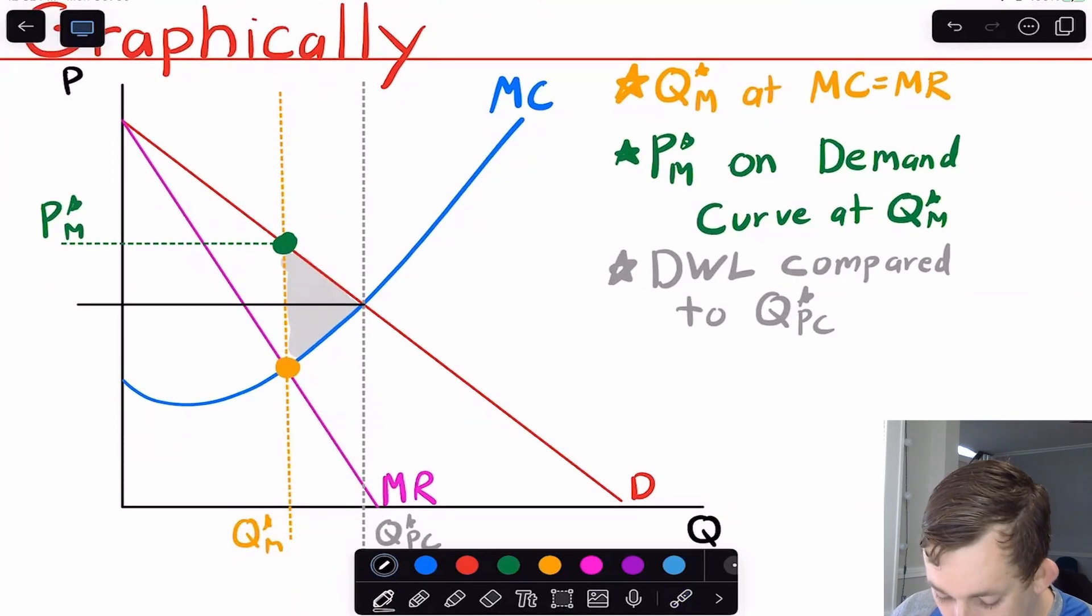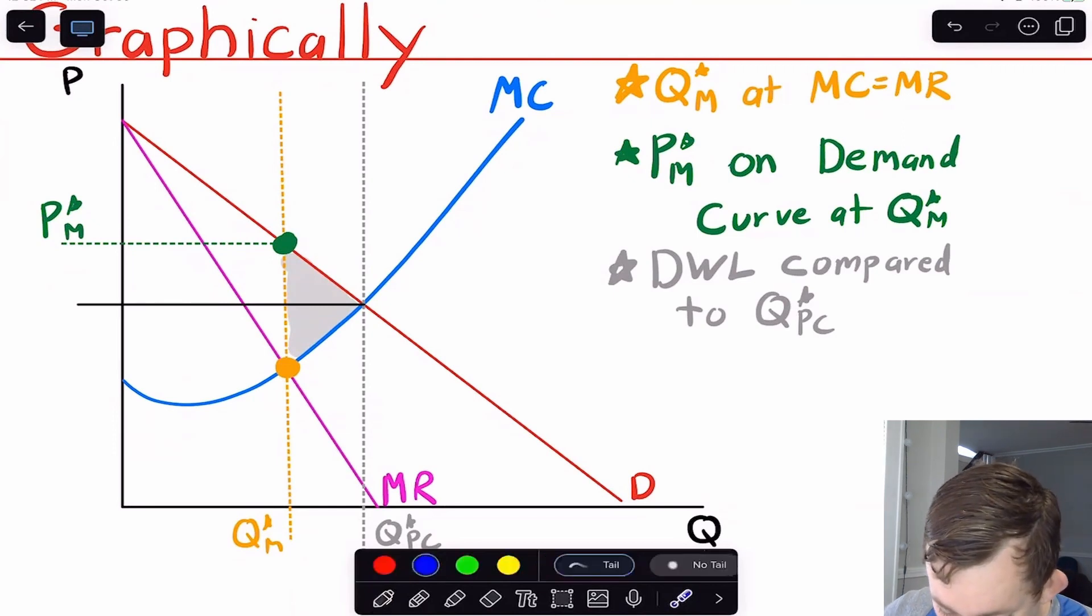And so the deadweight loss compared to a perfect competition market is the area drawn in gray, because if we were in perfect competition, then the price would be down here. And so all of these people would be willing to buy whatever this monopoly is selling. And a firm that wasn't a monopoly would want to sell all of these items right here to people. And so our surplus would increase by this triangle amount right here.